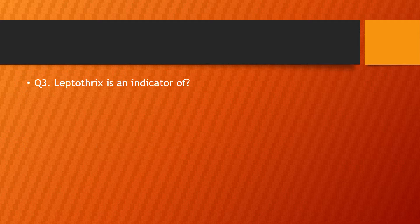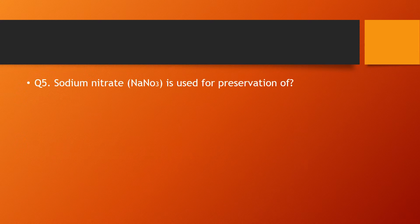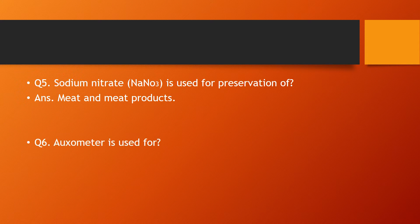Third question: Leptothrix is an indicator of — the answer is iron. Fourth question: what is a prion? — the answer is a protein structure that causes disease. Fifth question: sodium nitrate is used for the preservation of — the answer is meat and meat products.